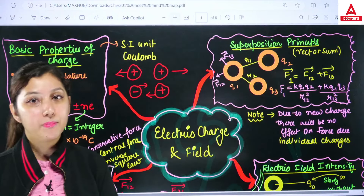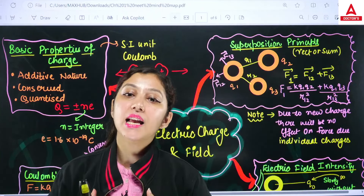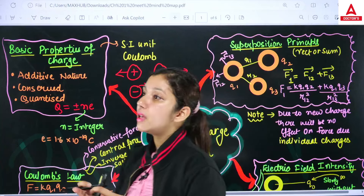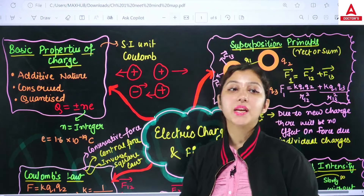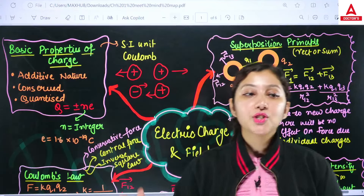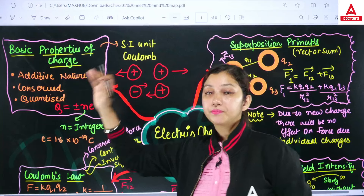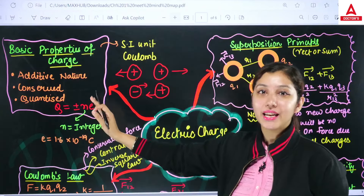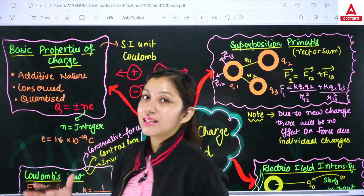Electric Charges and Field has many important topics: Coulomb's Law, finding neutral points, finding neutral charge, equilibrium, and continuous charge distribution leading to Gauss's Law. First, we covered what charge is — charge is an intrinsic property of matter. Then the basic properties of charge: additive nature, conserved nature, and quantization. Quantization means the total charge on any body is an integral multiple of electronic charge, i.e., q = ±ne, where e = 1.6 × 10⁻¹⁹ coulombs. Like charges repel; unlike charges attract.